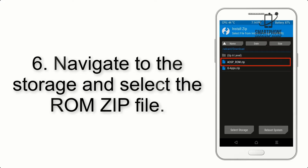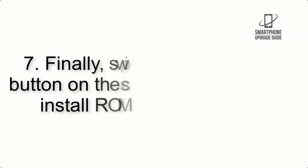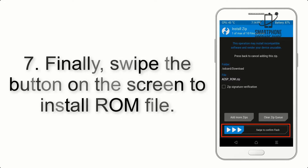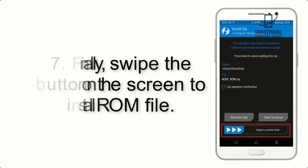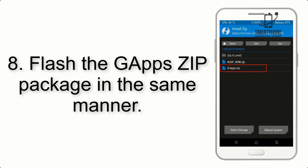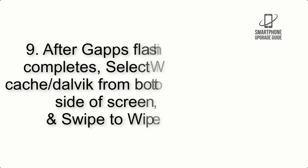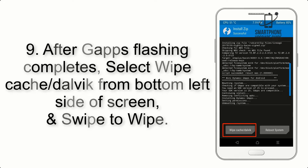Step 5: Go back to the recovery main screen and tap on the Install button. Step 6: Navigate to the storage and select the ROM zip file. Step 7: Swipe the button on the screen to install the ROM file.